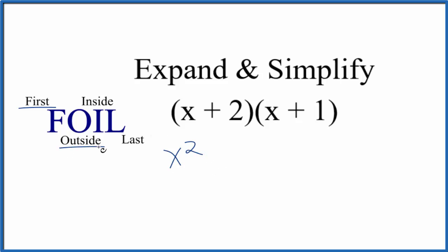Then we go to the outside terms. So this is on the outside and this is on the outside. x times 1, that gives us 1x. We don't write the 1, we just usually write x.